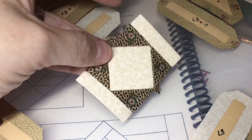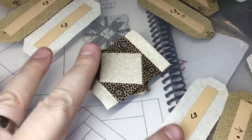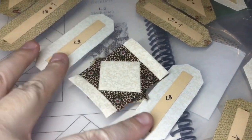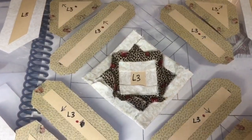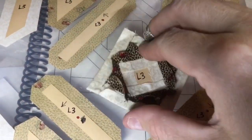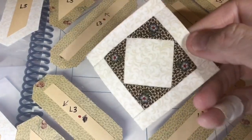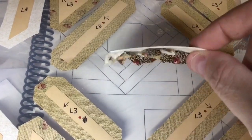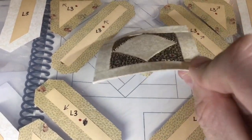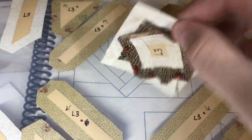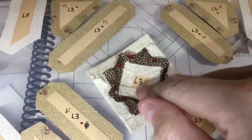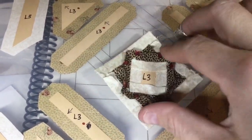I have the center section with the first border on and it's really dimensional. As you force it into shape, you're going to have this poochiness. That will come out once you get the papers out. That will come out in quilting, so don't get too worried about that.